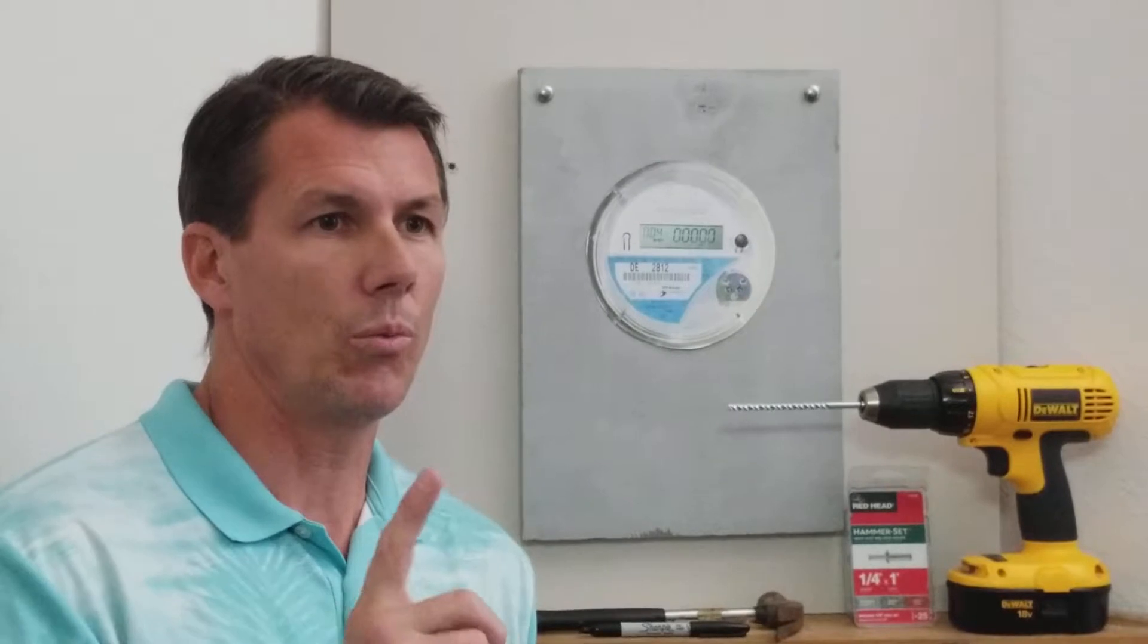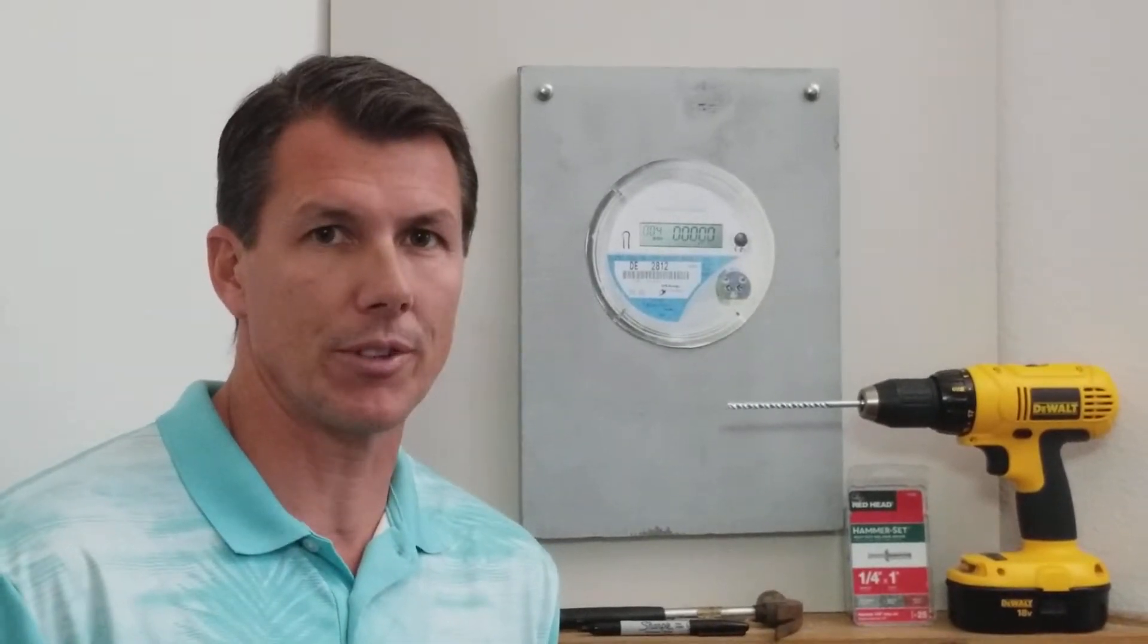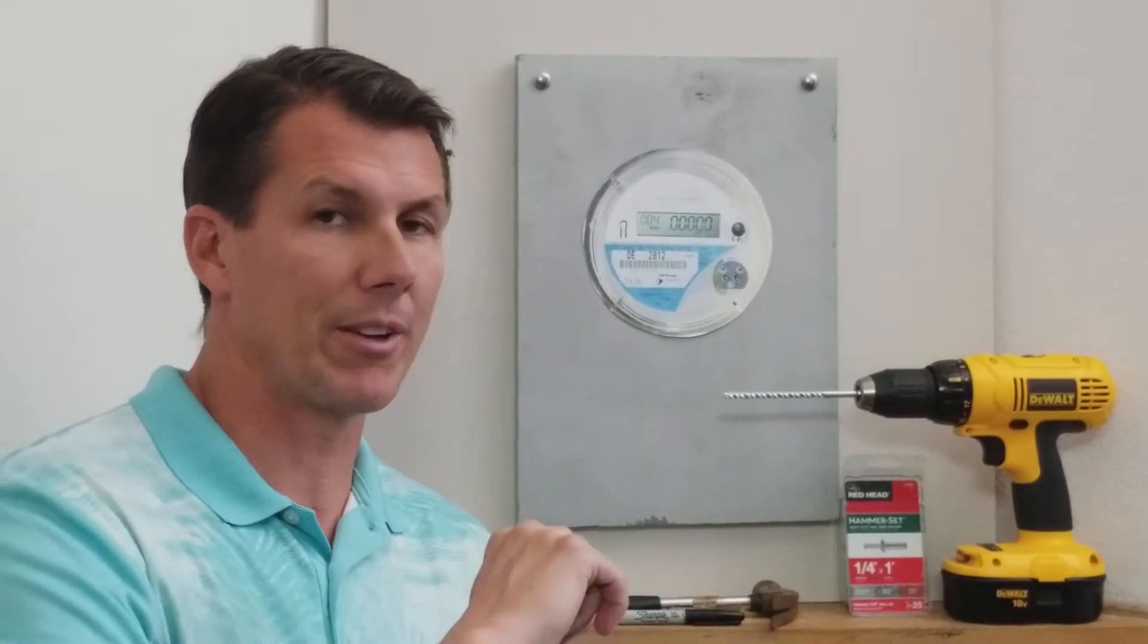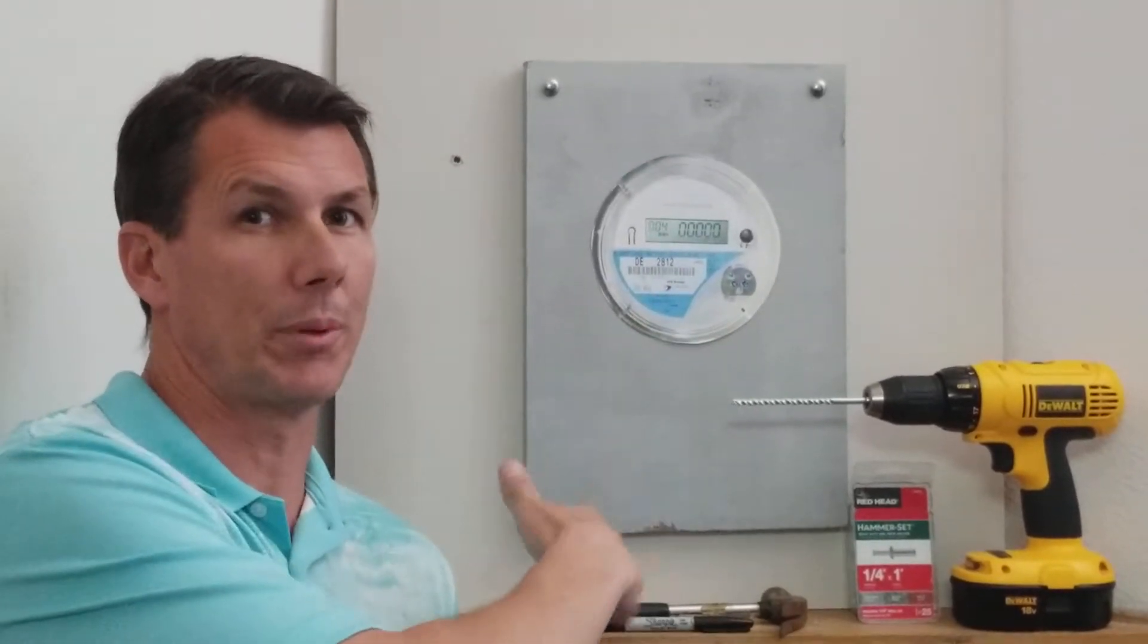The first thing you want to do is get the right materials. A one-quarter inch drill bit is the first of two things you're going to want. Ideally, get one that's meant for block or brick because we're probably going to be drilling into stucco, depending on what your home is made of.